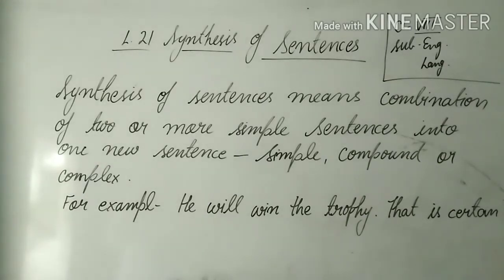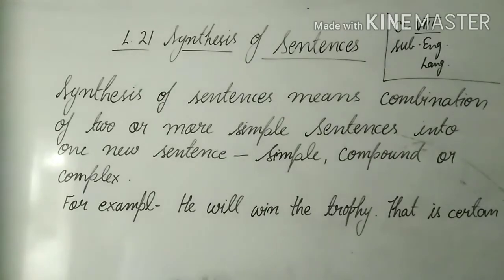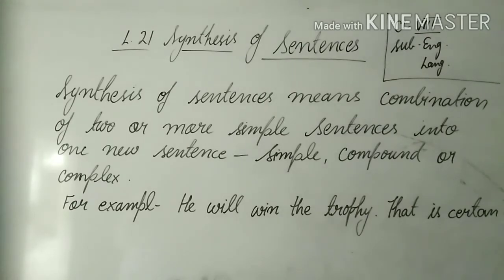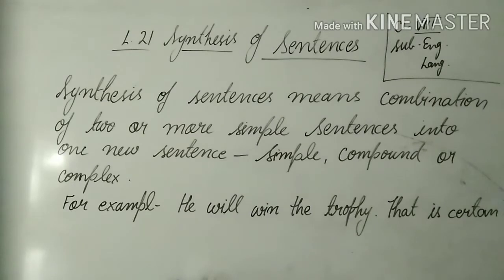A simple sentence means there is only one subject and only one main verb. A compound sentence means there are two main clauses — two clauses used in the sentence. A complex sentence means one main clause and one subordinate or dependent clause. The main clause carries the primary meaning, and the subordinate clause clarifies or supports it.